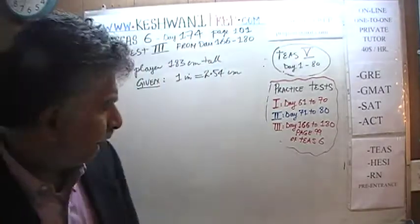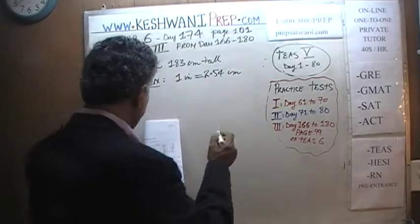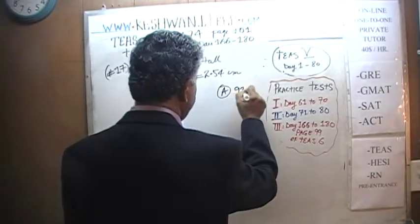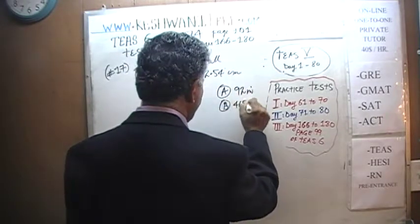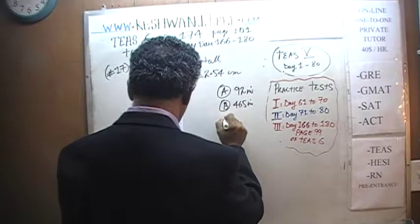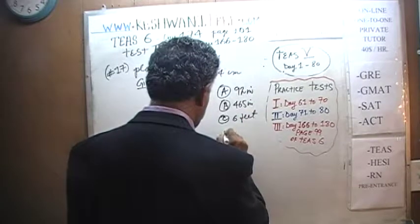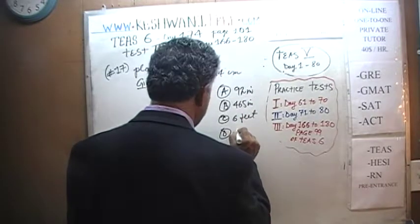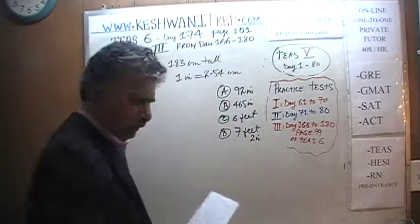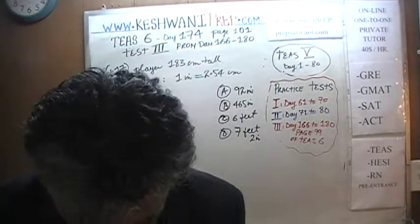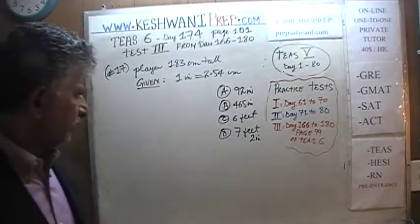Before we do any work, I want you to look at the answer choices very quickly. It says 92 inches, 465 inches, 6 feet, and 7 feet 2 inches. Let's see what we can do. Before we actually invest any time doing it out, let's understand what the answer choices are here.